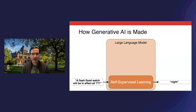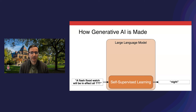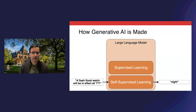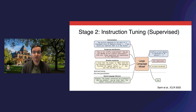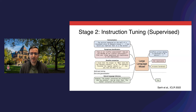Self-supervised learning is very powerful because cheap data leads to learning a lot of useful knowledge. But the big advances in the last couple of years have come from going beyond self-supervised learning — now that's just the starting point for further training. The next stage is supervised learning, also called instruction tuning. The model is explicitly trained to follow instructions and perform a variety of tasks from summarization to question answering and inference. Our research team at Snorkel, along with many collaborators, proposed this alongside concurrent work from Google, and showed that it led the LLM to better generalize to new unseen tasks. Instruction tuning has since become a standard part of LLM training.